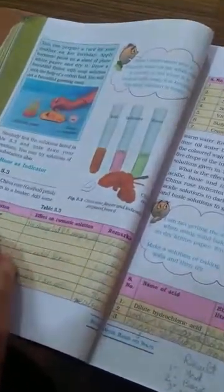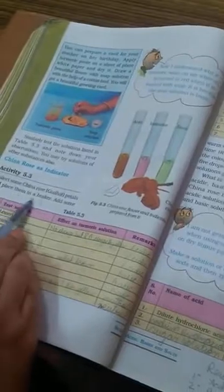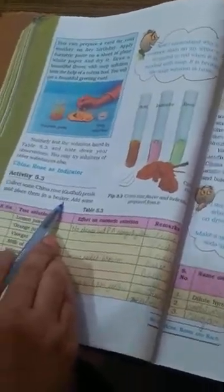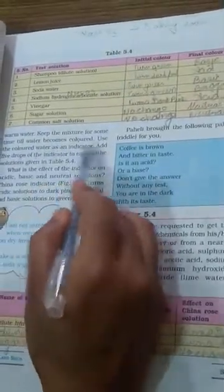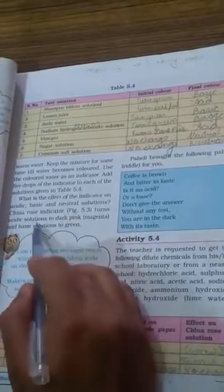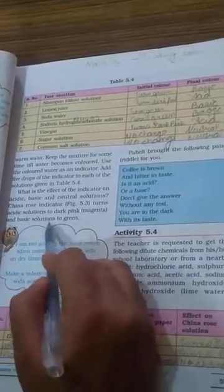It is about china rose. China rose as indicator. Collect some china rose petals and place them in a beaker. I suppose children you all know what is china rose. Add some warm water. Keep the mixture for some time until water becomes colored. Use the colored water as an indicator. Add 5 drops of the indicator to each of the solutions. What is the effect of the indicator on acidic, basic and neutral solutions? China rose indicator turns acidic solutions to dark pink and basic solutions to green. Now we will see it how it changes the color.